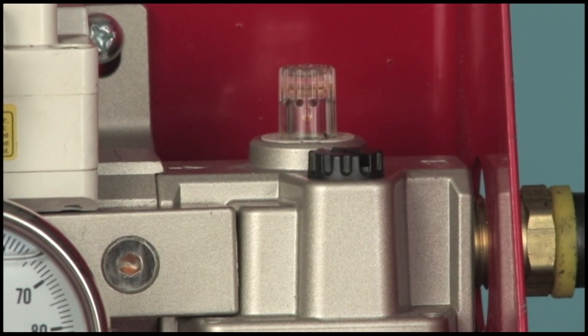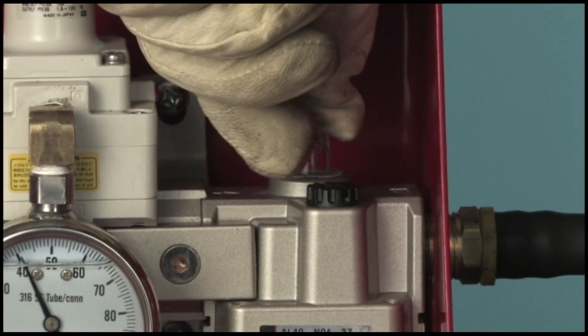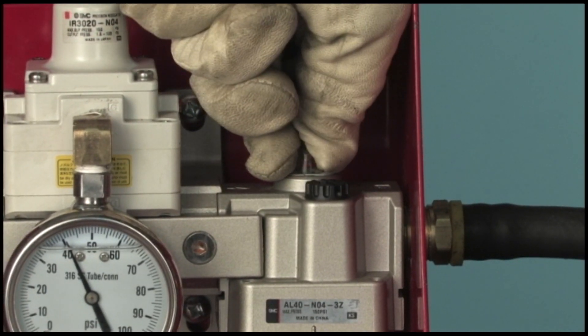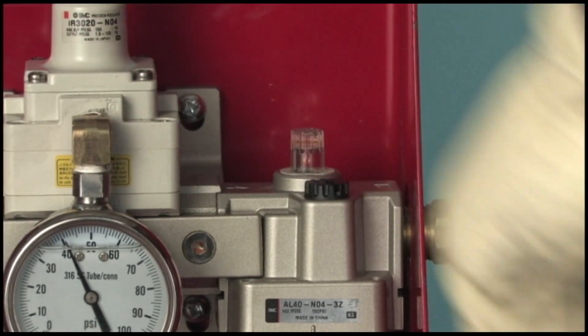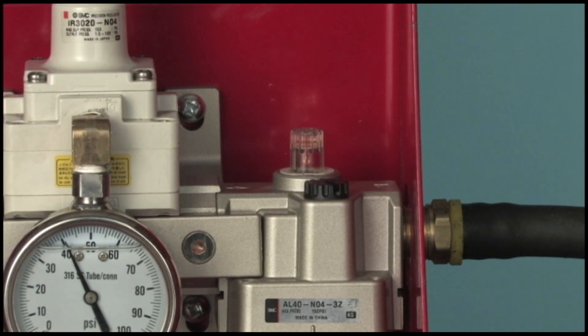Unscrewing this knob increases the oil flow, and screwing it in decreases the oil drops. Adjust the flow to approximately one drop every 10 seconds.